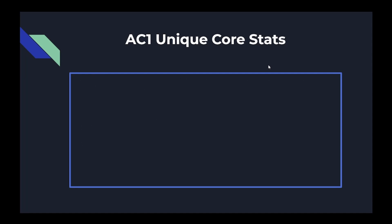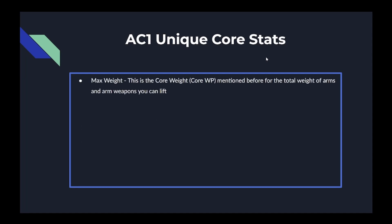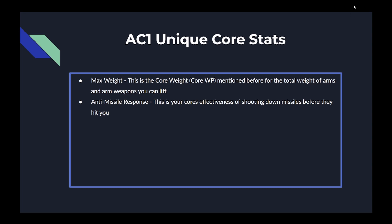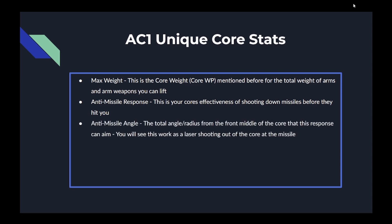The next set of stats are the unique core stats. The first is max weight, which is the core weight point — the total weight of arms and arm weapons the core can support. The next stat is anti-missile response, which is the core's effectiveness at shooting down missiles before they hit you by itself. The anti-missile angle is the total angle and radius from the front middle of the core that this response can aim — a cone where if a missile is flying at you within it, the core will try to shoot it down for you.